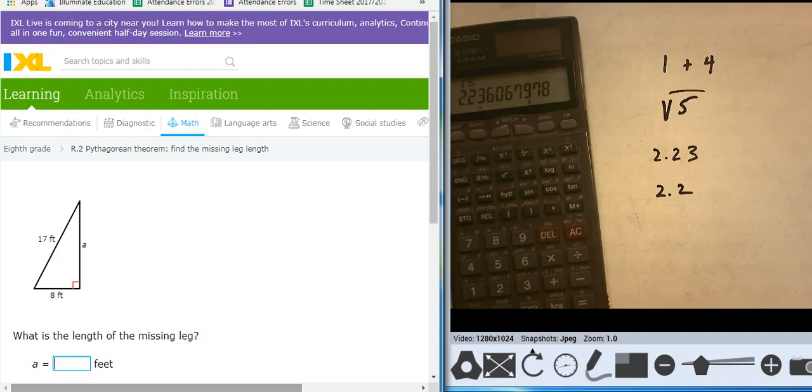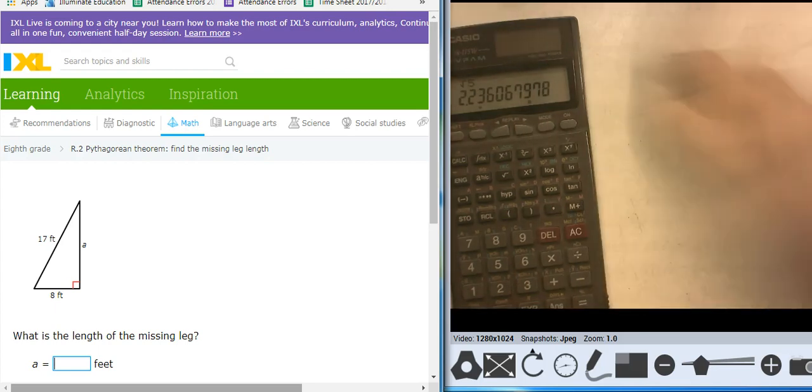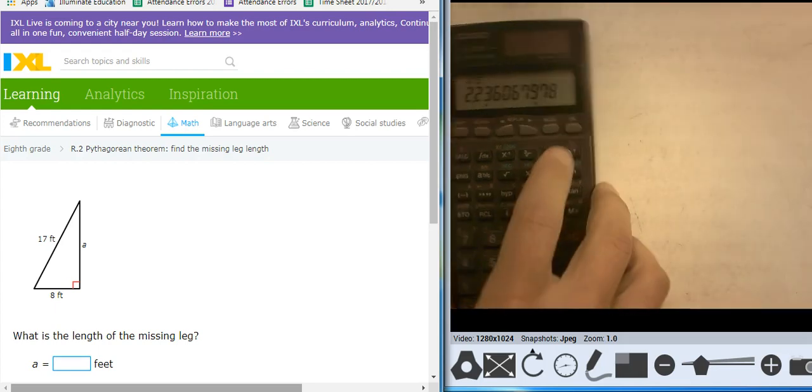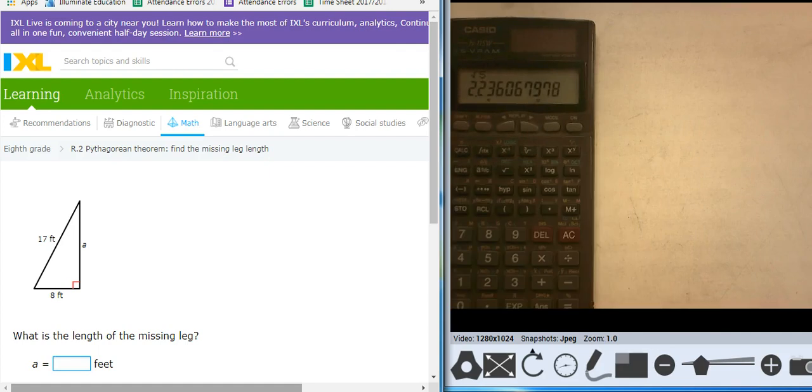Hi, this is Mr. Barr, and in this video I'm going to be dealing with the Pythagorean Theorem and finding the length of a missing leg. So here's the triangle, and I have the hypotenuse and one of the legs. The hypotenuse is 17 and one of the legs is 8.